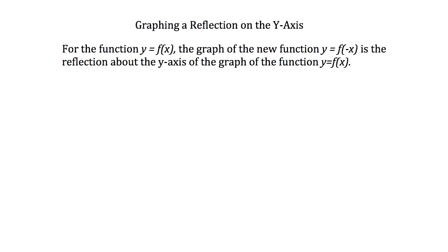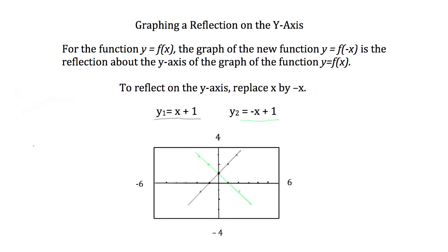The next key concept involves graphing a reflection on the y-axis. For the function y equals f of x, the graph of the new function y equals f of negative x is the reflection about the y-axis of the graph of y equals f of x. To reflect on the y-axis, simply replace x by negative x. On the graph, y1 equals x plus 1 and y2 equals negative x plus 1 are identical graphs, reflected as if we folded the original graph along the y-axis, giving the same graph going in the opposite direction.